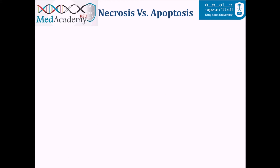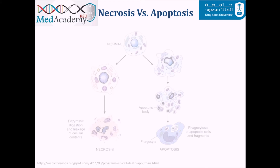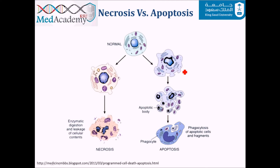Before we go into the mechanisms of cell injury, there are two important topics to address: necrosis and apoptosis. We need a brief understanding of the difference between the two — these will be discussed in much more detail in the third part of this lecture. We also need to discuss the causes of cellular injury, because we need to answer why cell injury happens before we understand how.